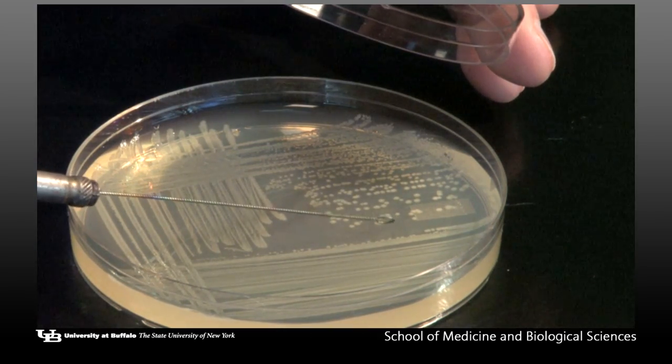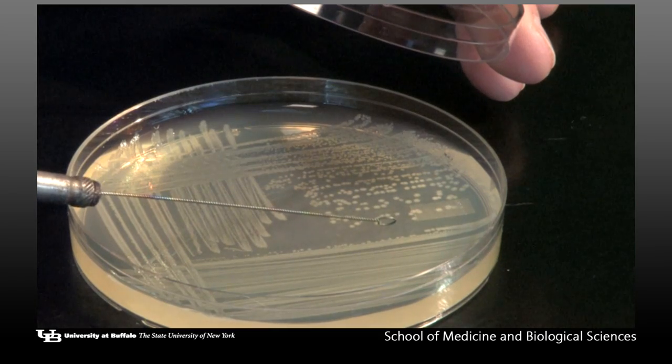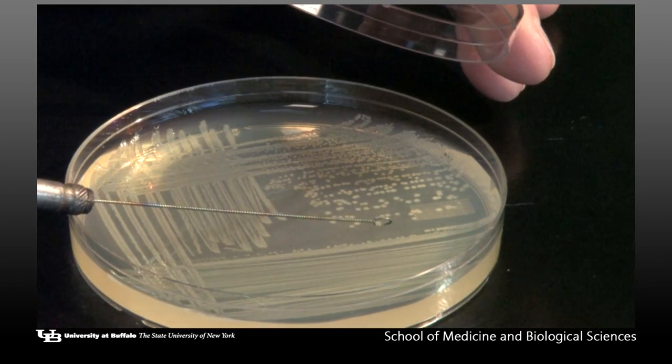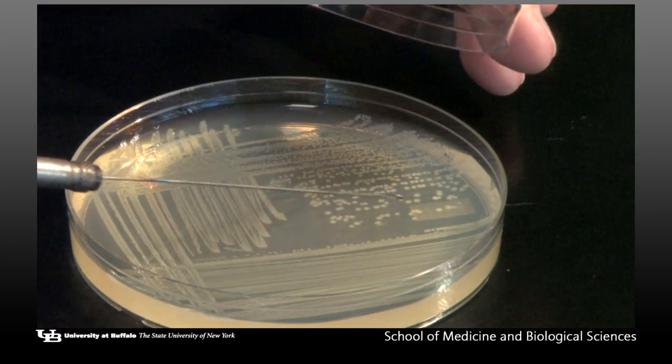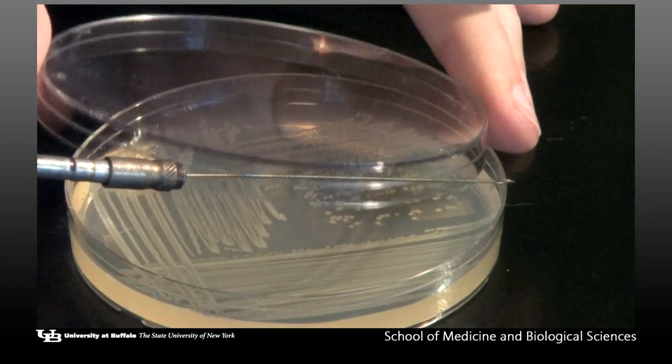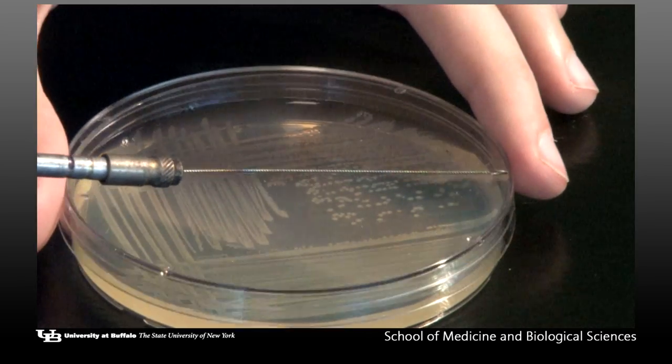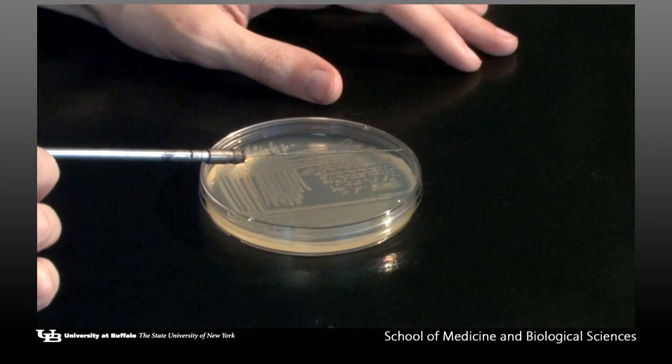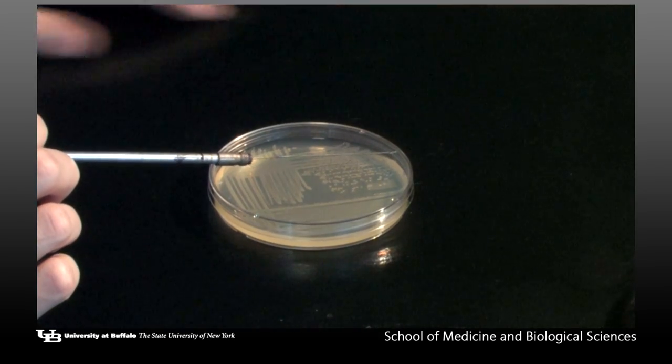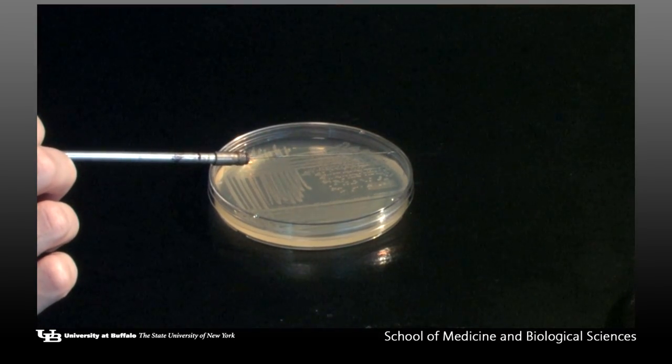Obtain a small amount of bacterial growth by gently touching a colony with the wire tip. Do not scoop an entire colony. Touching the colony is sufficient. Carefully remove the loop from the plate and hold it still as you replace the lid. Transfer of the specimen on the loop may be made to either a broth or an agar plate.